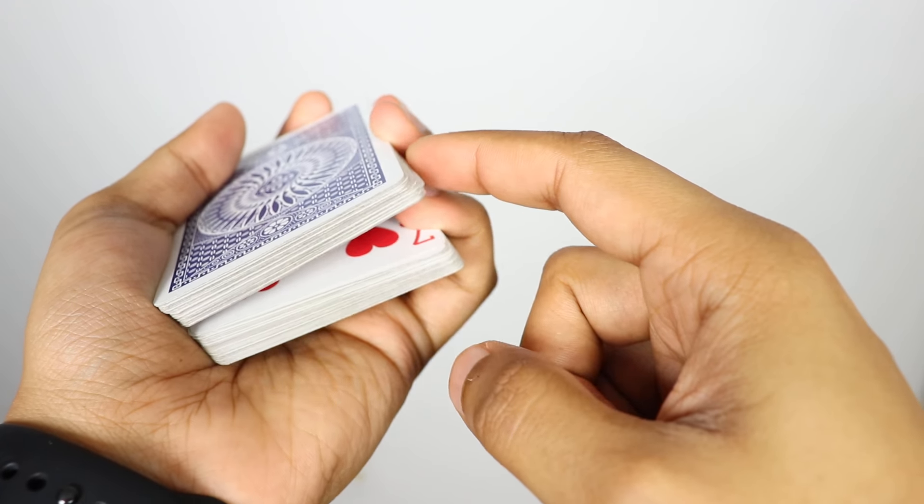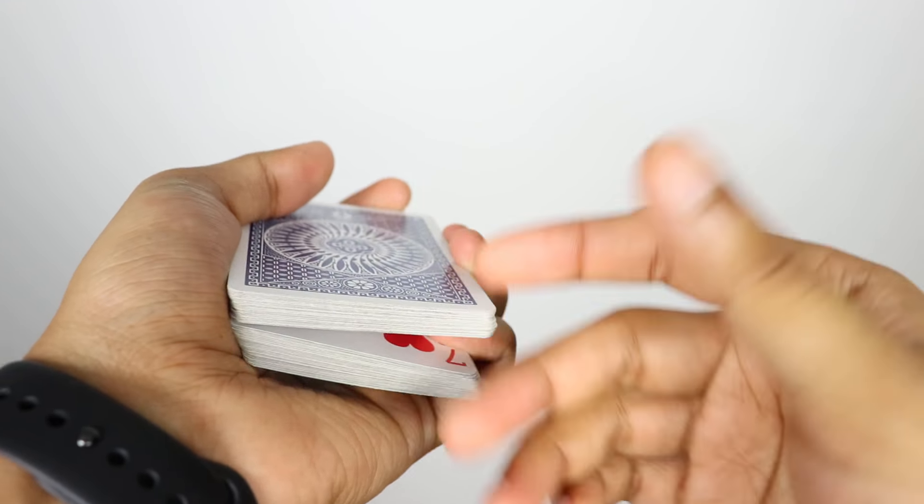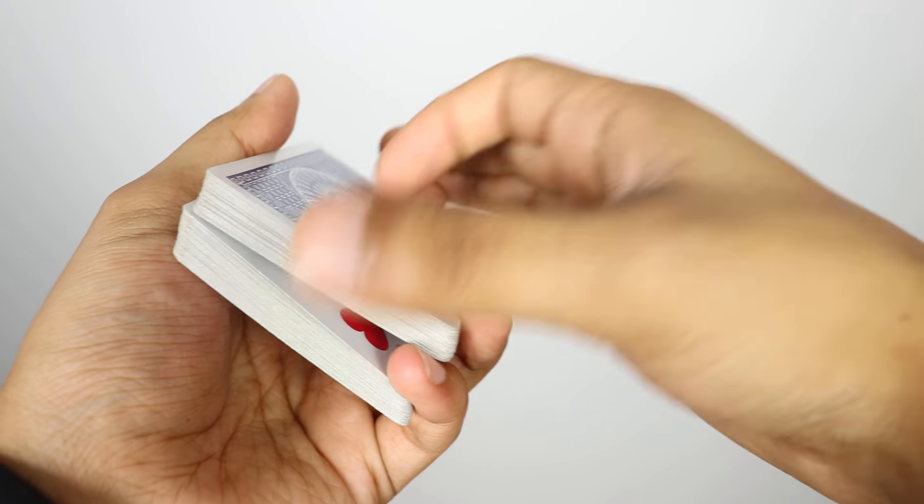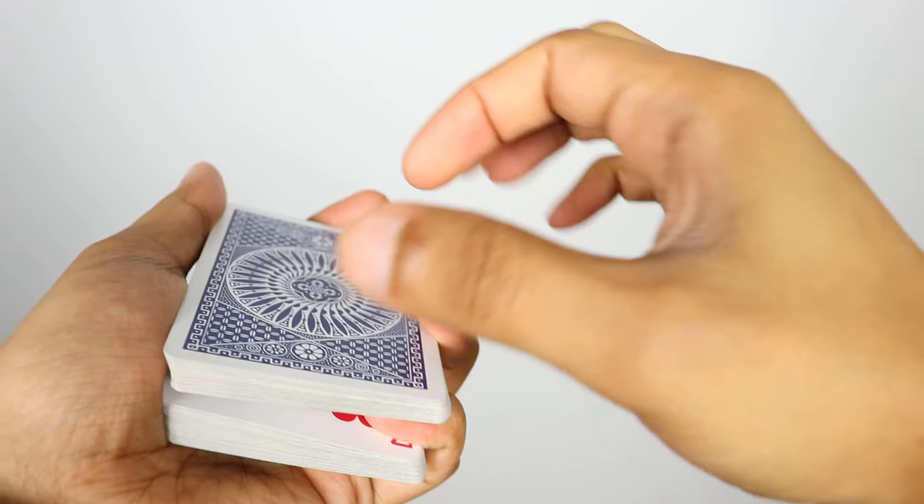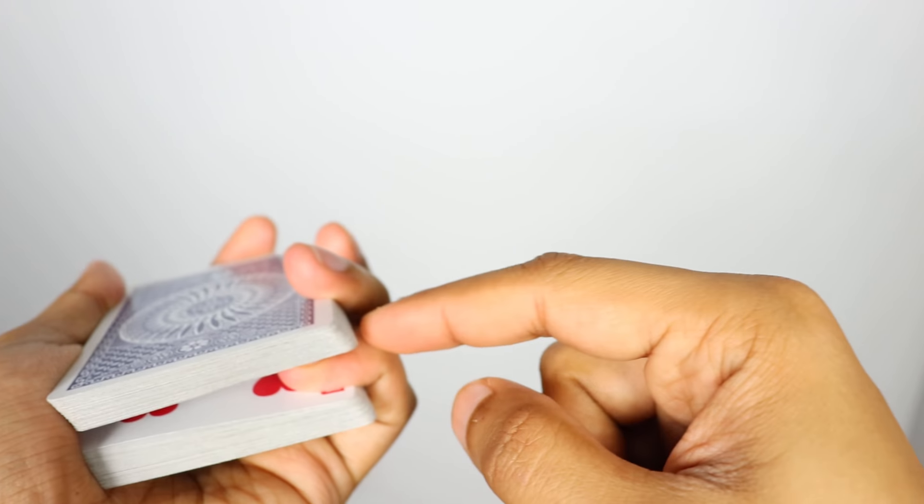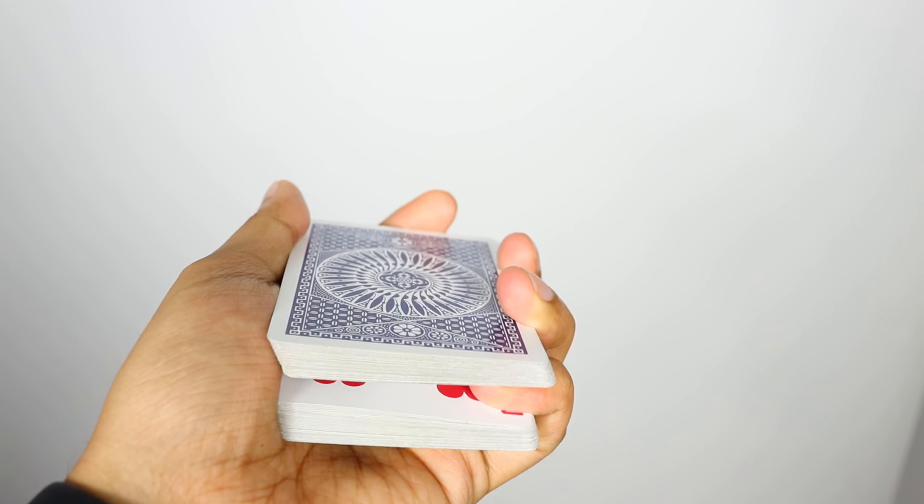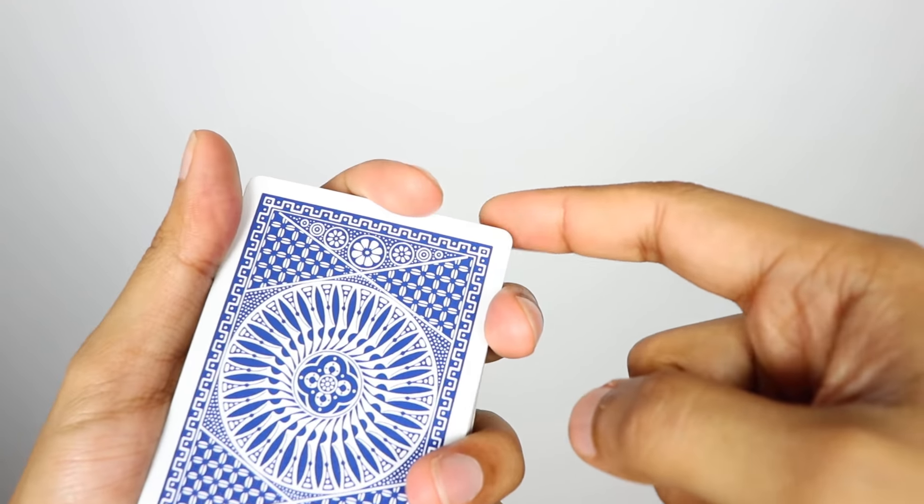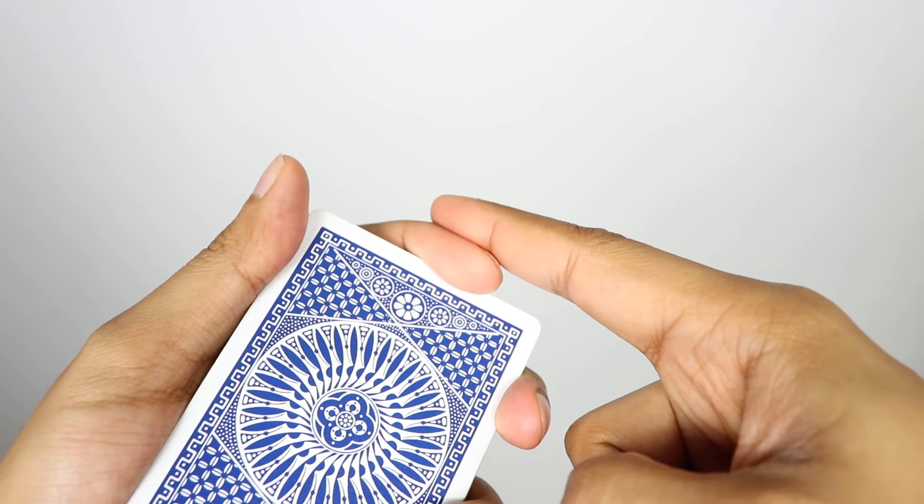And it's like a really deep pinky break. Your pinky is all the way inside versus like this pinky break. If this has another name, I'm sorry I don't know it. So you're going to push your pinky really deep in there. And you're pretty much going to grab this top packet with your pinky on the bottom and your ring finger on top.